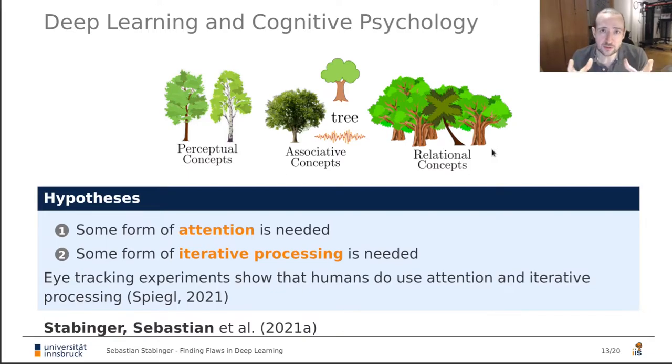And after looking at quite a lot of data sets, experiments with data sets and animal experiments and human experiments, I came to the conclusion that there's two things that deep learning systems need to be able to solve these relational concepts efficiently. And number one is attention is needed. And attention basically means that you're able to focus your compute resources onto specific parts of the input. And number two, that some form of iterative processing is needed so that you can do something over and over and use the information from previous iterations in the next iterations. And some eye tracking experiments of a master student that I supervised was able to show that for the data sets that I've shown you previously, if humans solve those, then we could show that they do use attention and they do use iterative processing. So they switch between the two objects and compare them this way. And we were able to publish all of this at the Journal of Vision.